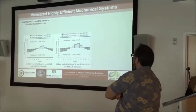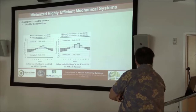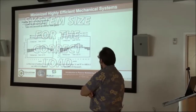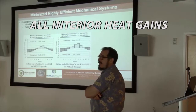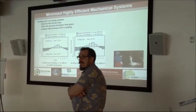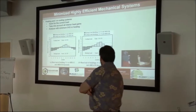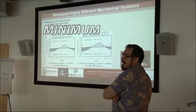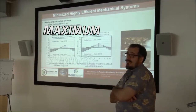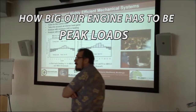When we start looking at our mechanical systems for passive house, we want to make sure that we have these systems sized for the correct load. We need to take into account all interior heat gains because we're basically building a thermos that's trapping heat in there. We need to analyze our buildings with minimum interior heat gains in the winter and maximum interior heat gains in the summer, so we understand what our peak loads are — how big our engine has to be to heat and cool this building.